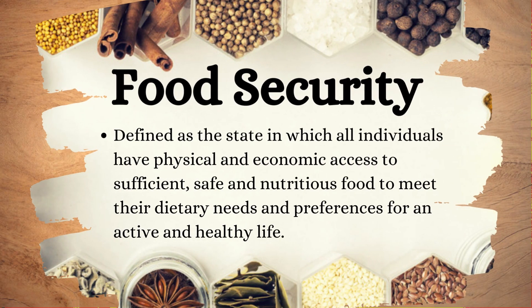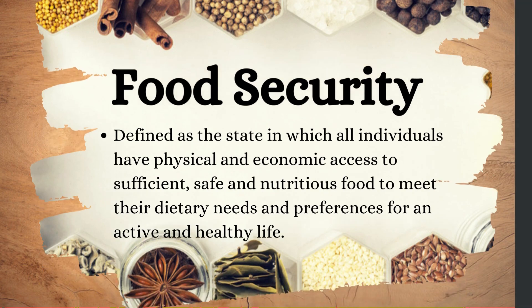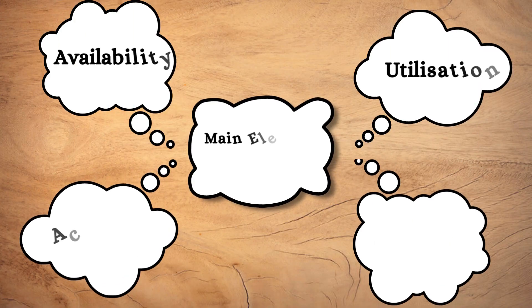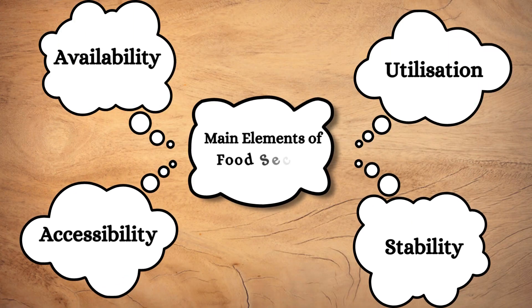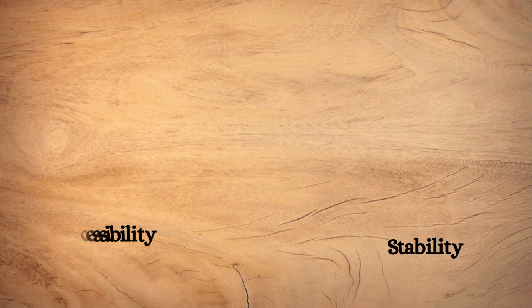Let's dive into our topic. The main elements of food security consist of availability, accessibility, utilization, and stability.